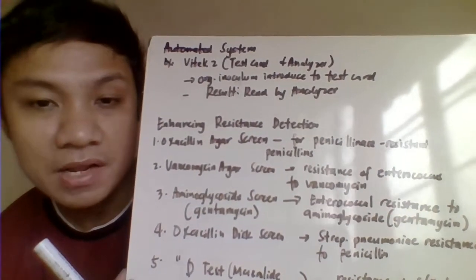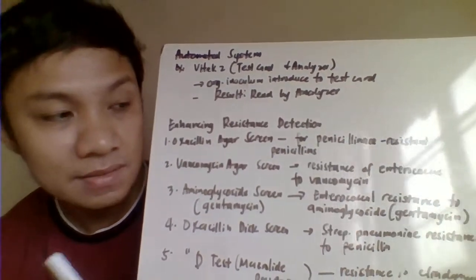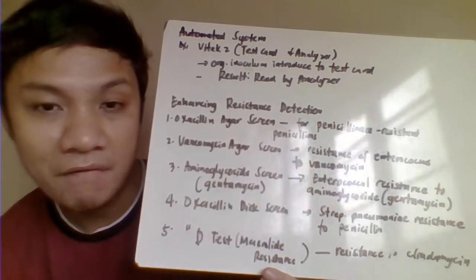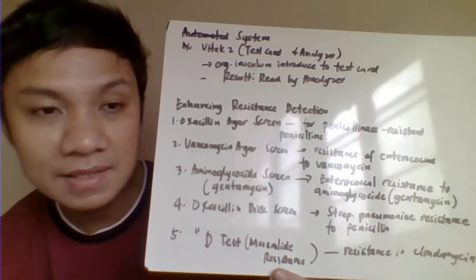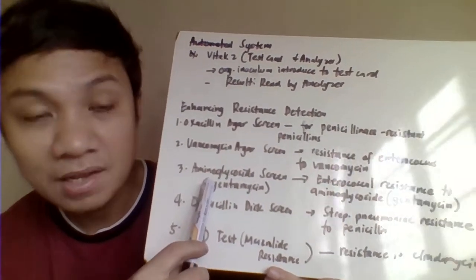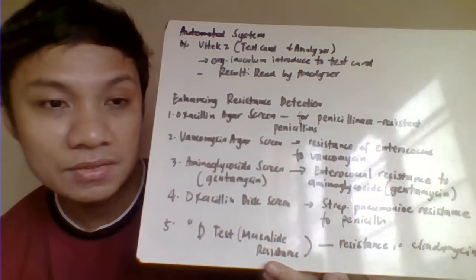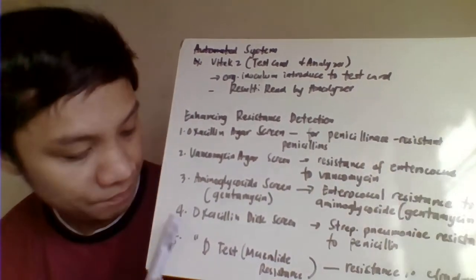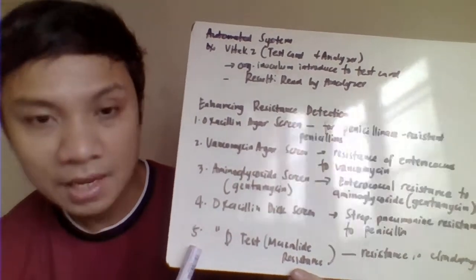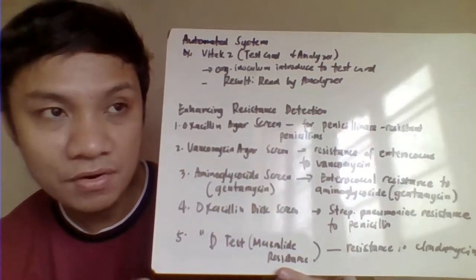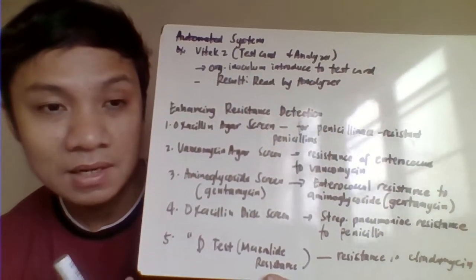The Vancomycin-Agar screen detects Enterococcus resistance to vancomycin. The Aminoglycoside screen detects Enterococcus resistance to gentamicin, which is an aminoglycoside. We also have the D-test for detection of resistance against macrolides — erythromycin and inducible clindamycin — among Staphylococcus aureus.